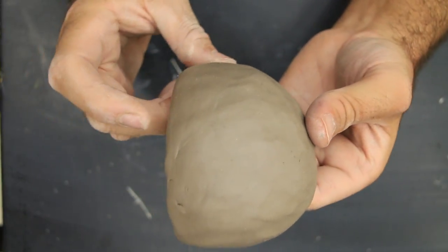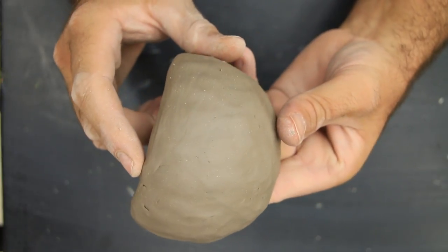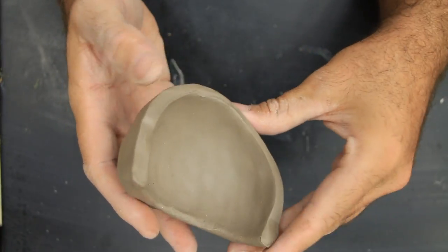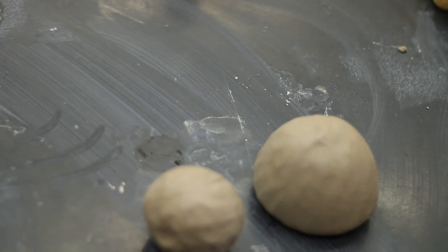Once you've gotten this far, then you can set this aside. When you set it down, you want to set it on the rim of the pot. Setting it on the bottom of the pot will cause it to get a flat bottom. If your pot gets a flat bottom, it'll be hard to turn into a sphere later on.